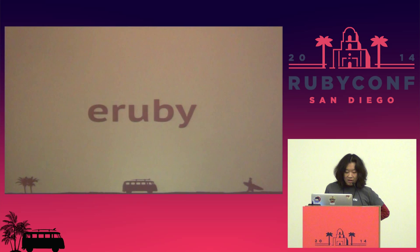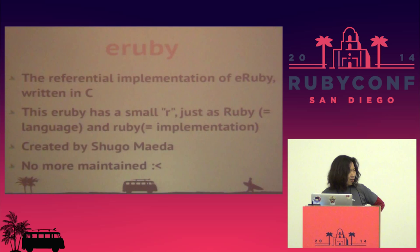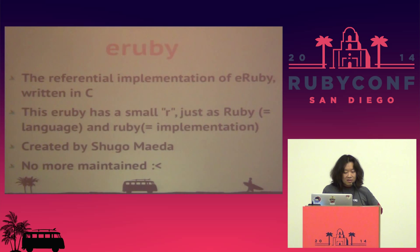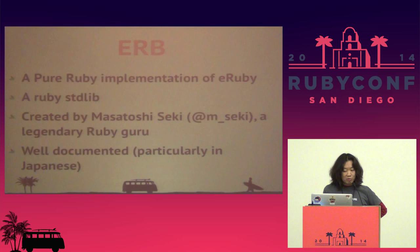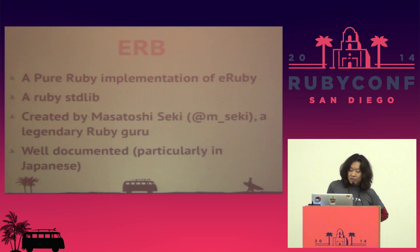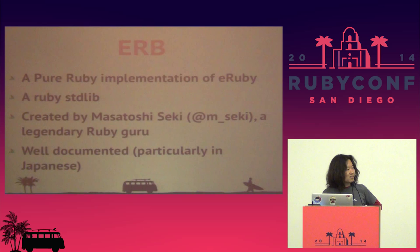There's yet another eRuby — with a small 'r' — which is the reference implementation of eRuby, written in C. It was created by Shugo-san, but unfortunately this eRuby is no longer maintained. Instead, we have ERB, which you know very well. ERB is a pure Ruby implementation of eRuby, included in the Ruby package as a standard library. ERB was created by Masatoshi Seki, a legendary Ruby programmer who also created things like Rinda, dRb, and other awesome libraries.